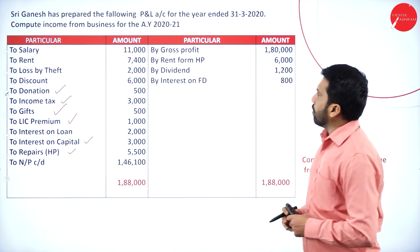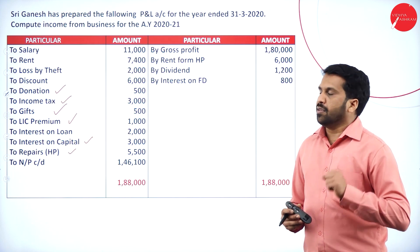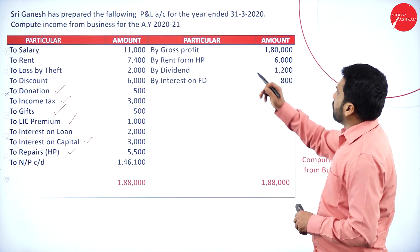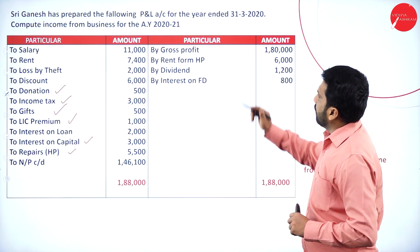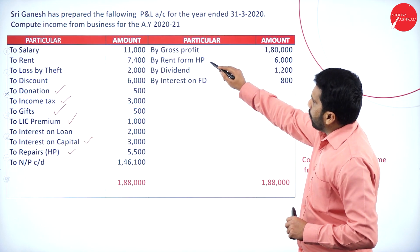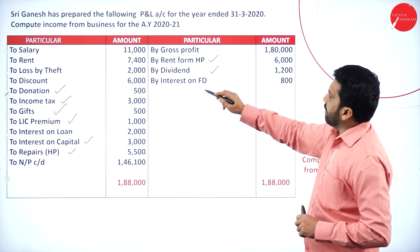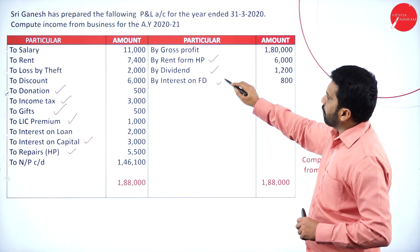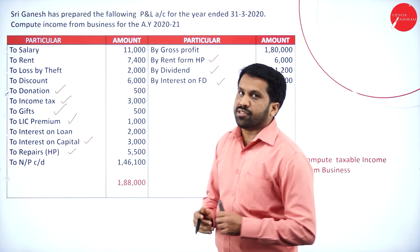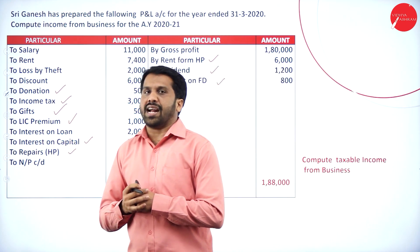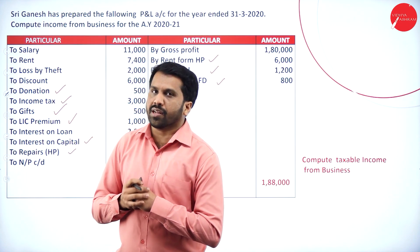Similarly, on the income side: gross profit — we will not touch. Rent from house property — yes, other head. Dividend — yes. Interest on FD — yes. These come under your taxable other head incomes.